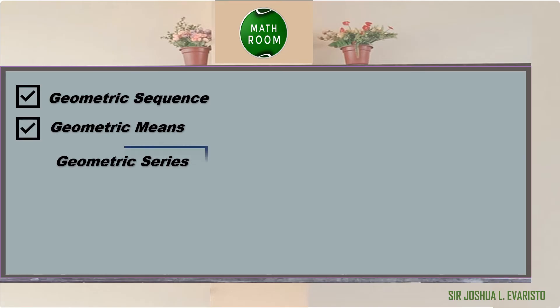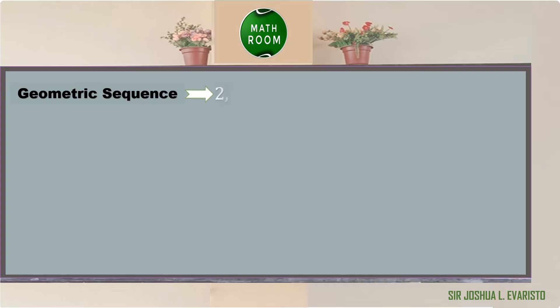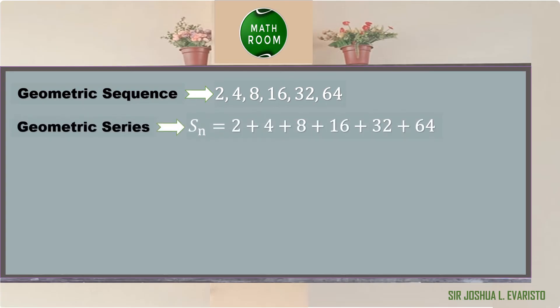Now that we know about geometric sequence and geometric means, we can proceed with geometric series. A geometric series is the sum of the terms in a geometric sequence. For example, the geometric sequence 2, 4, 8, 16, 32, 64 has a sum — that is, s of n equals 126.